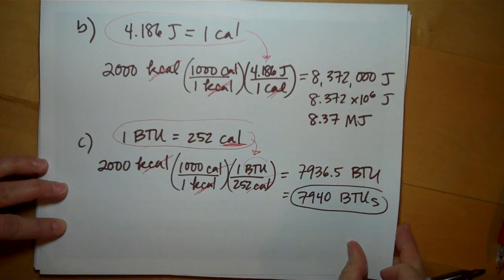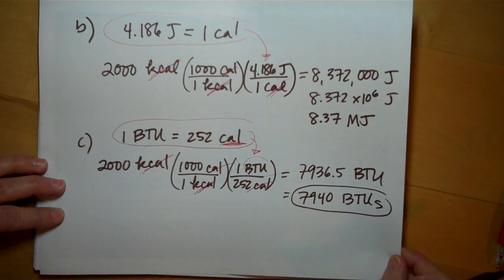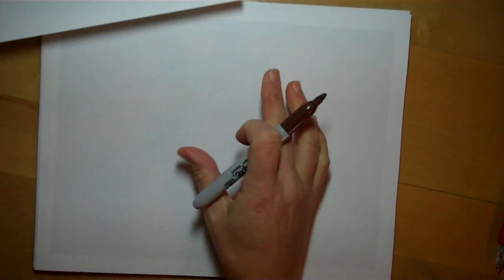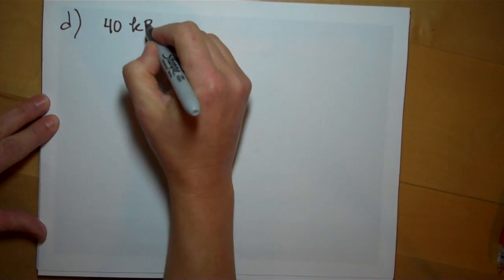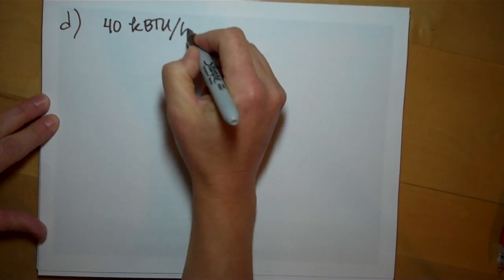And then the last problem, part D, says you have a water heater that can supply 40 kilobtus per hour.